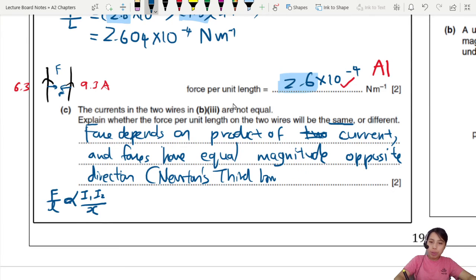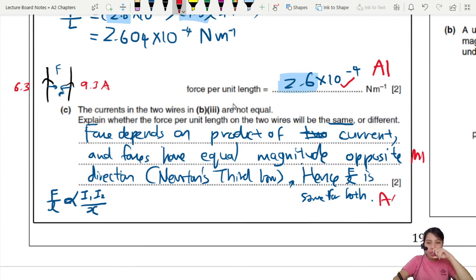Force depends on product of the currents. And the force have equal, both forces have equal magnitude opposite direction. That sounds familiar. Is that Newton's third law? Yes, it is. Equal magnitude opposite direction. Aka, Newton's third law. So you can conclude, because of that, it doesn't matter how different that current is, the force will still be the same.